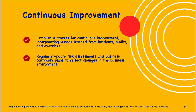Next is continuous improvement — establish a process for continuous improvement, incorporating lessons learned from incidents, audits, and exercises. Regularly update risk assessments and business continuity plans to reflect changes in the business environment. Gather feedback from stakeholders and participants after each test or real incident, and use that feedback to make continuous improvements to the business continuity plan.